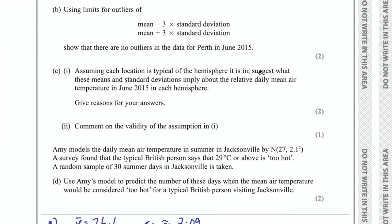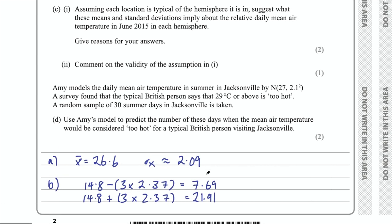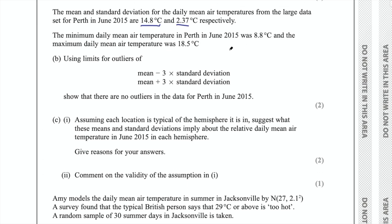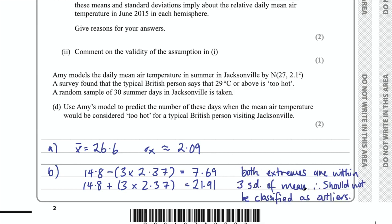It's probably a good idea to finish with a statement. Something like: both extremes are within three standard deviations of the mean, therefore they should not be classified as outliers. Just a short statement to summarize your calculations.